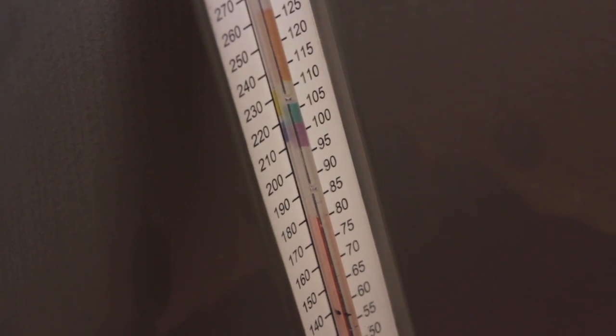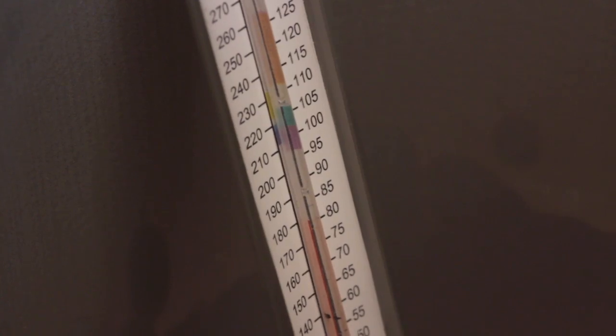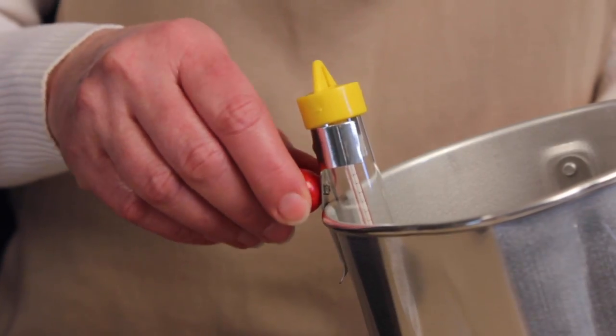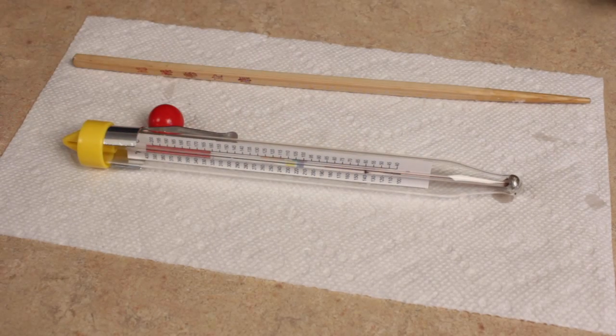Once again, make sure the wax is at 180 degrees Fahrenheit. You are now ready to pour. Turn the heat source off. Remove the thermometer from the pouring pot and place it on the paper towel.